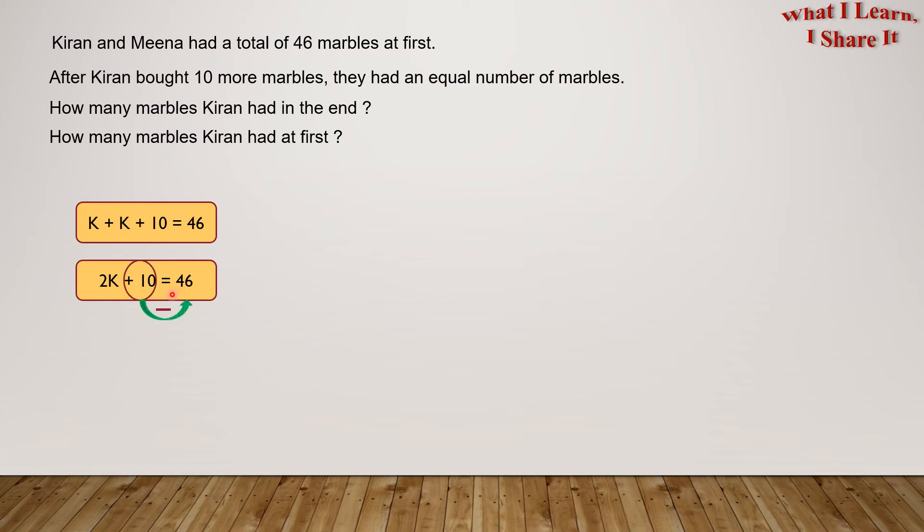We need to separate out K in order to find out Karen's marbles. So first, let's separate out plus 10. In order to do that, we can transpose plus 10 to the other side. Remember, when we transpose, the sign changes. So we'll get 2K equals 46 minus 10. This gives us 2K equals 36 because 46 minus 10 equals 36.